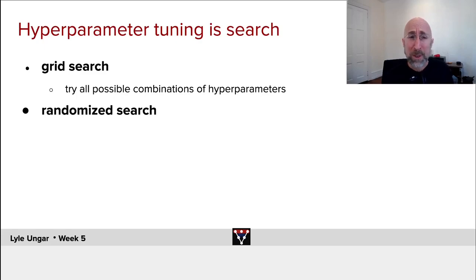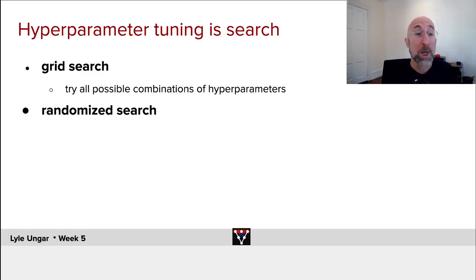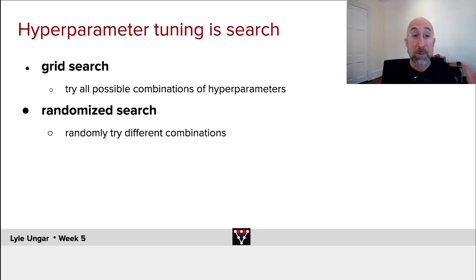Almost as good — sometimes better, sometimes worse — is a randomized search. Just try different random combinations of hyperparameters and see what works.